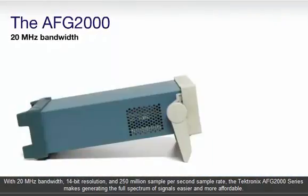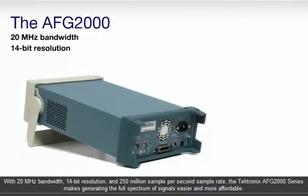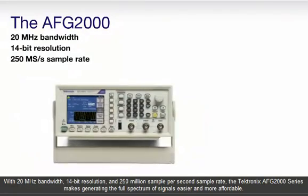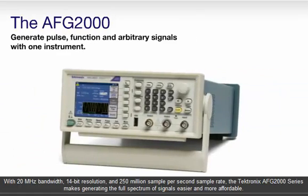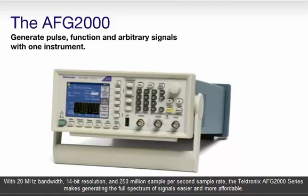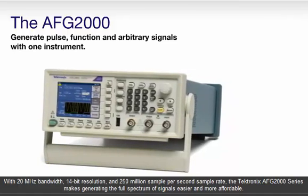With 20 MHz bandwidth, 14-bit resolution, and 250 million samples per second sample rate, the Tektronix AFG-2000 series makes generating the full spectrum of signals easier and more affordable.